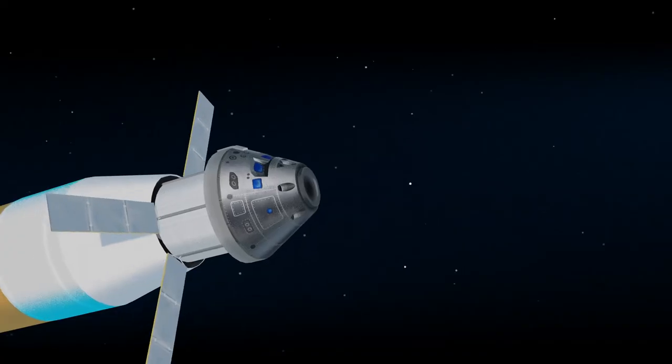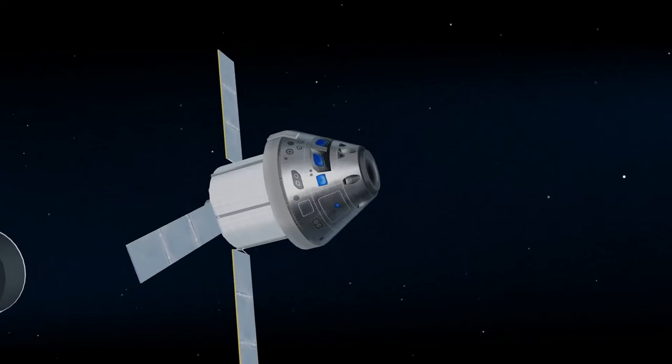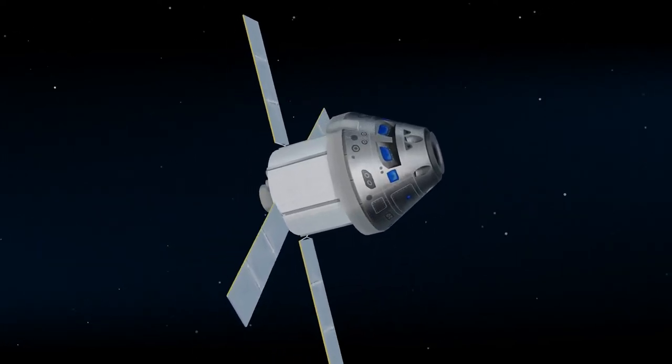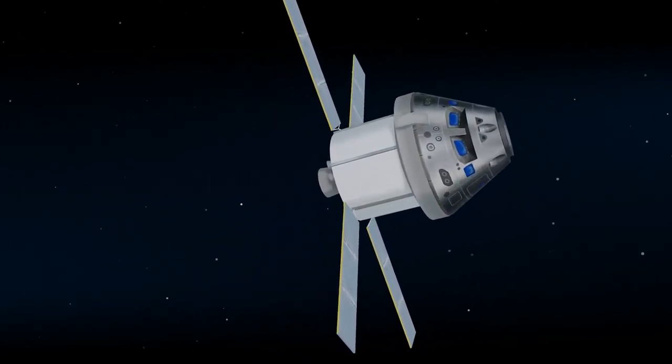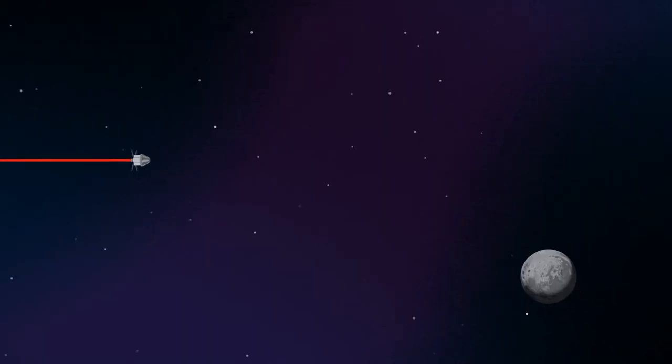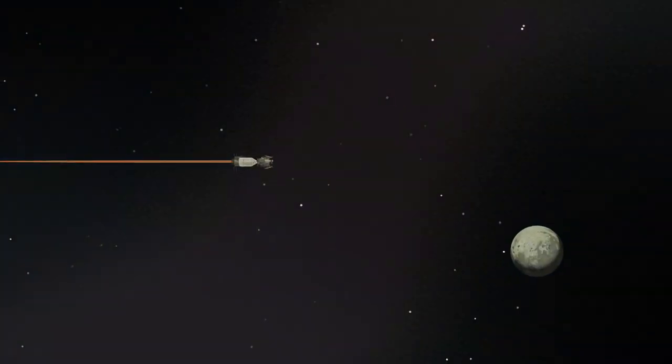Once the burn is complete, the upper stage of the SLS is jettisoned, and the crew aboard Orion coast for several days toward all that awaits them at the Moon. Approaching the Moon, we see the fundamental differences between Artemis and Apollo.